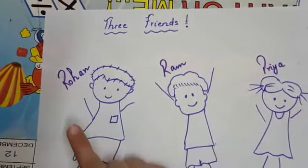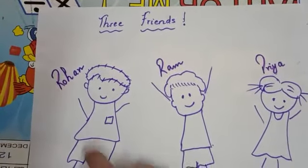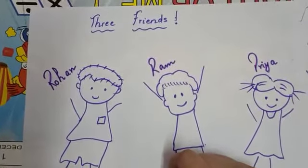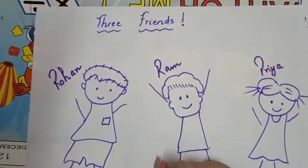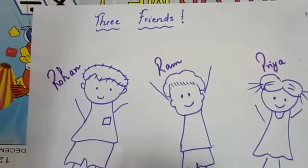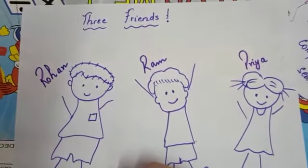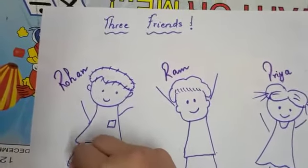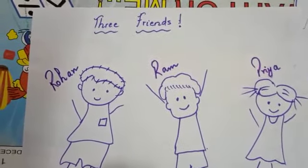So Rohan thought of an idea. He started missing his friends a lot, so he called both of them and told them, let's connect online — we'll play online. So they connected through a video call. Rohan got a ludo board and tokens for all three of them. He placed the tokens on the board and told them to get the dice, and they rolled the dice. Rohan moved their tokens one by one.